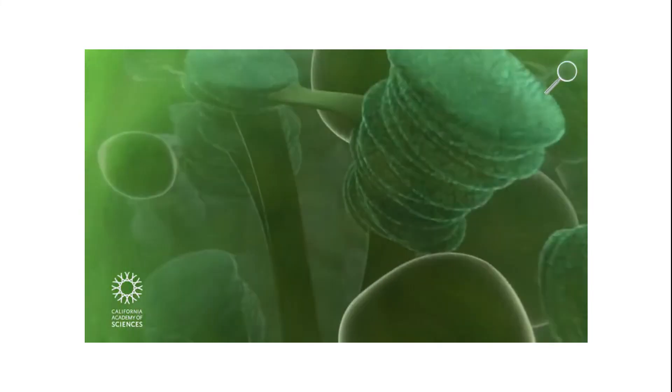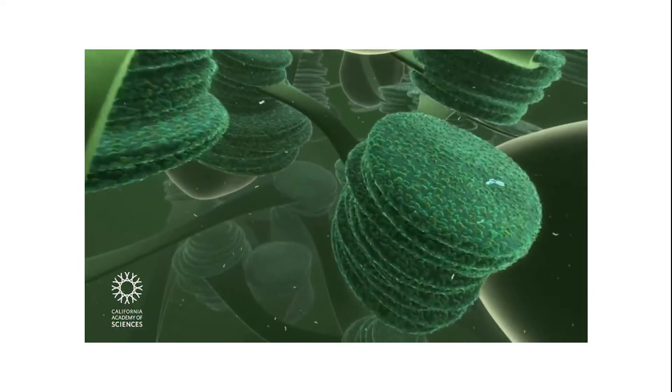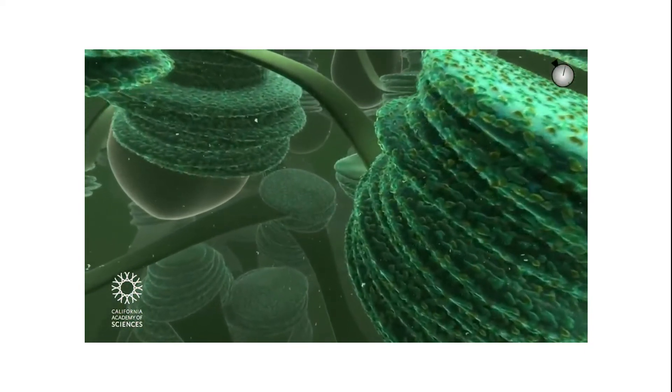The green pigment, chlorophyll, is embedded in the thylakoid membranes and is essential for photosynthesis. Each stack of thylakoids is called a granum.